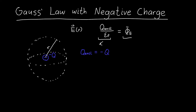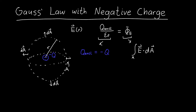Now what about the electric flux? We calculate this by taking the surface integral — the integral over the area of my Gaussian surface of the electric field dotted with the area vector dA. For a sphere, dA is always pointing outwards, radially away from the center of the sphere.